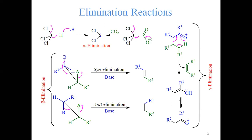Eliminations may be classified as alpha elimination, beta elimination, and gamma elimination. Alpha elimination refers to two leaving groups — one with an electron pair and one without — on the same carbon atom. Beta elimination occurs when the two groups are on adjacent carbons, while gamma elimination occurs when they are in a gamma position to each other.